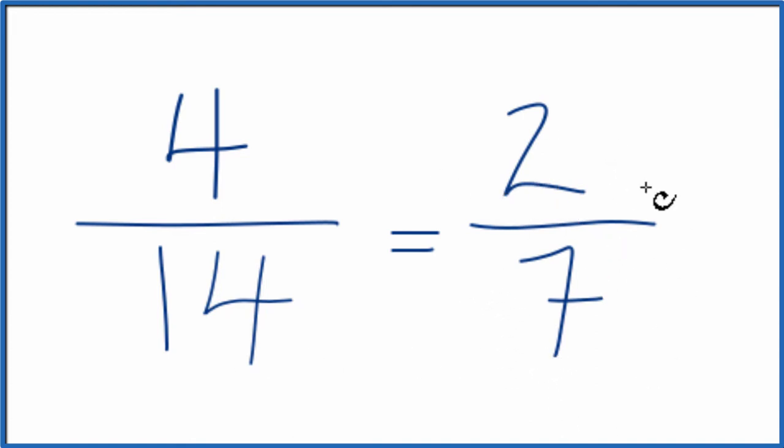We can't reduce this any further. There's no common multiple between 2 and 7. So we've simplified the fraction 4 over 14 down to 2 over 7.